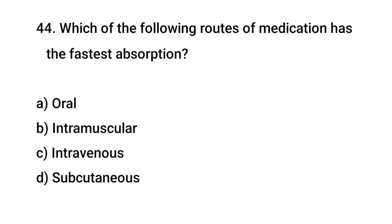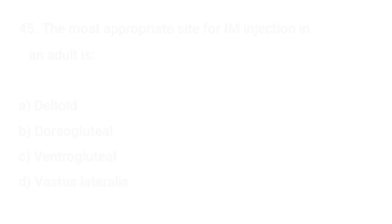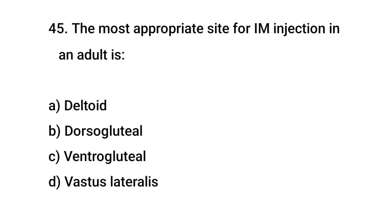Question No. 44. Which of the following routes of medication has the fastest absorption? The right answer is C. Intravenous. Question No. 45. The most appropriate site for IM injection in an adult is? The right answer is C. Ventrogluteal.